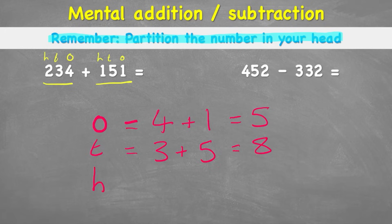And lastly, I would look at my hundreds and I would remember that 234 obviously has 200 and 151 has 100, giving me a total of 300. Therefore, when I put this back together in my head, I would have 385.